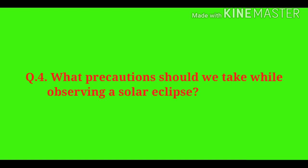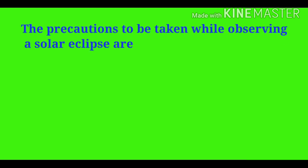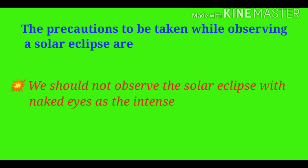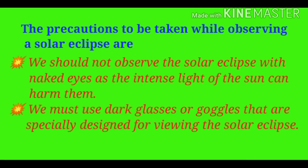Question number four: What precautions should we take while observing a solar eclipse? We should not observe a solar eclipse with naked eyes, as the intense light of the sun can harm them. We must use dark glasses or goggles that are specially designed for viewing the solar eclipse.